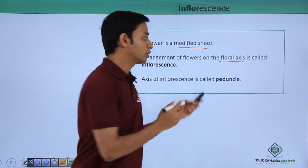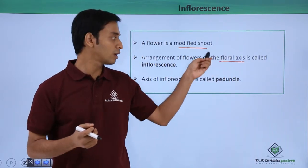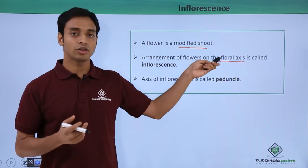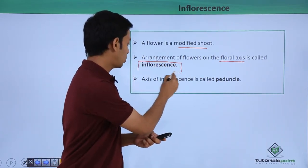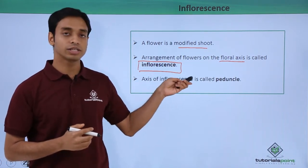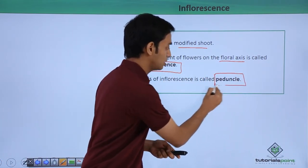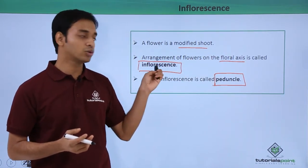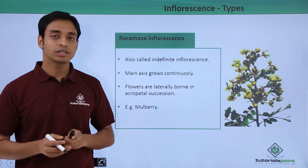These flowers are nothing but modified shoots. The arrangement of flowers on the floral axis — the main axis where the flowers are arranged — is known as the floral axis. The axis of inflorescence is given the term peduncle. So the arrangement of flowers on the peduncle is known as inflorescence.